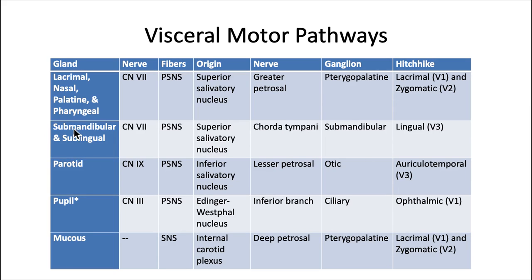For the submandibular and sublingual glands, they share the same nerve pathway. Cranial nerve 7 is responsible, with parasympathetic fibers controlling saliva secretion. These fibers originate from the superior salivatory nucleus and are carried by the chorda tympani of the facial nerve. They synapse at the submandibular ganglion, then hitchhike along the lingual nerve of V3.